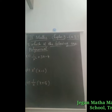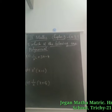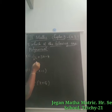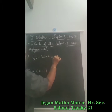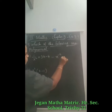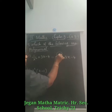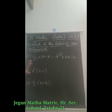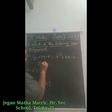Which of the following are polynomials? For the given expression, we have to check whether it is a polynomial or not. First, 1 by x squared goes into the numerator; we write it as x power minus 2 plus 3x minus 4. This is a negative integral power, so it is not a polynomial.